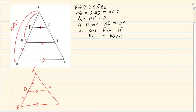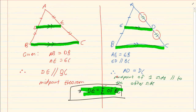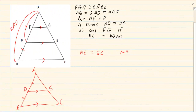So immediately, what can you tell me about AE and EC? AE is going to equal EC. The reason you are going to use is the theorem that says midpoint of one side parallel to the third side — your grade 10 theorem. Because what did they give us? They gave us that a side is equal and that a side is parallel, so immediately I can say the third side bisects. Midpoint of one side parallel to the other.